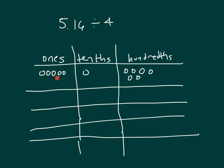Start with the ones place. Distribute them. 1 left over. Regroup that 1 over in the tenths place. There's now 11 of them. Divide by 4 is 2, and I have 3 that are left over.